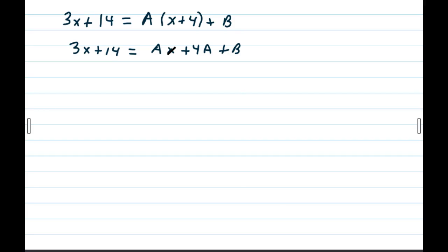So we take our 3x plus 14 equal to A times x plus 4 plus B. I distribute the A to get 3x plus 14 is equal to Ax plus 4A plus B. Take a look at 3x plus 14 is equal to Ax plus 4A plus B.